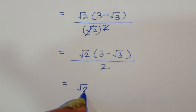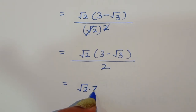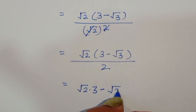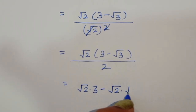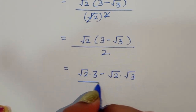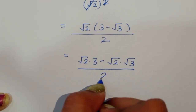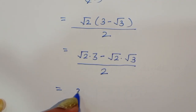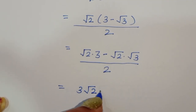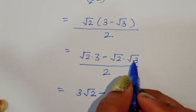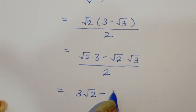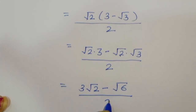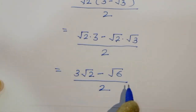Expanding the numerator: square root of 2 times 3 minus square root of 2 times square root of 3, which gives 3 square root of 2 minus square root of 6, all divided by 2.